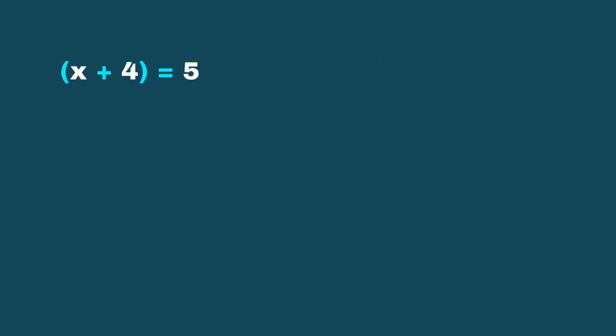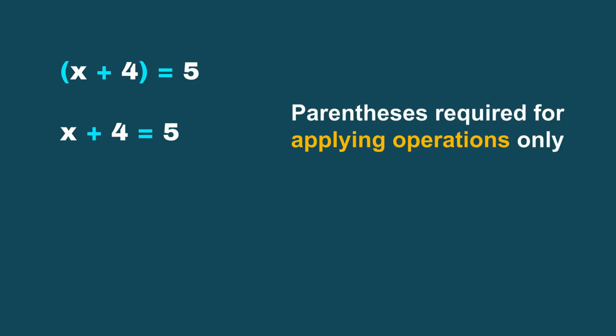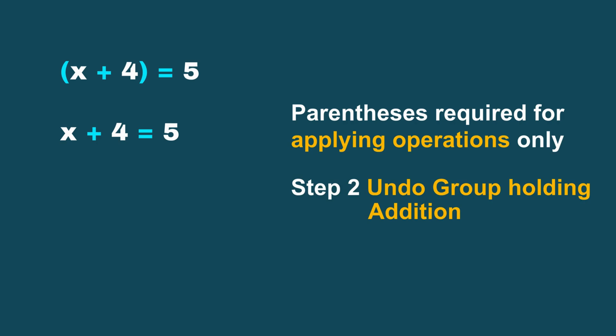On the left-hand side of the equation, the 2 in the numerator and the 2 in the denominator cancel out, leaving us with only x plus 4. On the right-hand side, 10 divided by 2 is 5. Now we have a much simpler equation. Since nothing else is on the left-hand side with the group x plus 4, we can remove the parentheses — parentheses are only required if an operation must be applied to the whole group. In step 2, we undo the addition by subtracting 4 from both sides. The plus 4 and minus 4 cancel out, leaving x alone, and 5 minus 4 is 1. So x equals 1.